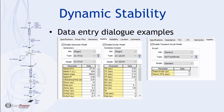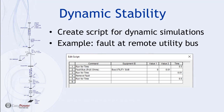To run a dynamic stability simulation, you have to create a script inside the program. This tells the program what actions to take and for what durations. In this example, we're faulting the utility substation bus for a very short duration, then clearing that fault, and running for an additional duration to see the effect on the equivalent inverter and PV system.